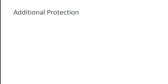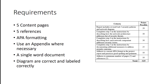Moving on to the requirements for this paper — it is broad, I understand. So if you get stuck, reach out. Requirements, things that you have to include: five content pages, five references minimum. Here's the overall grading criteria and the points possible. You have to use APA formatting. Use an appendix if necessary. I want everything in a single Word document — I don't want eight documents, one Word document. If you are not sure how to manipulate Word to do what you need to do, reach out and let me know.